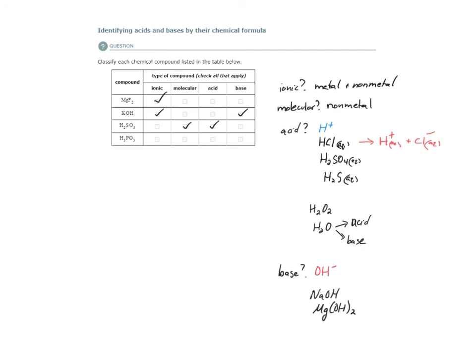Our last one here, phosphorus acid, is again molecular. There are no non-metal atoms here. And it's also an acid. I see hydrogen here at the beginning of the chemical formula. It's not one of the rare exceptions. And it also doesn't have hydroxide in it. So it's not a base.